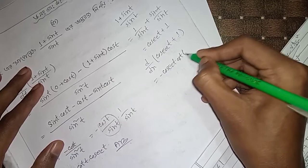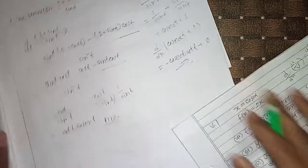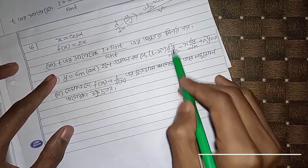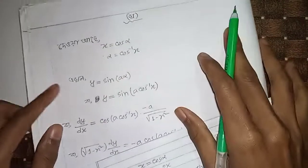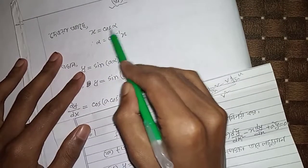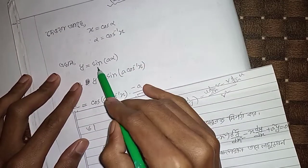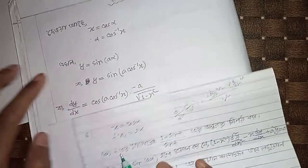The next problem: y equals sin(a·alpha) where one minus x² d²y/dx² minus x dy/dx plus a²y equals zero. First, x equals cos alpha, so alpha equals cos⁻¹(x). Therefore y equals sin(a·cos⁻¹(x)).